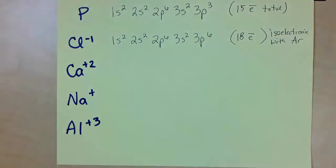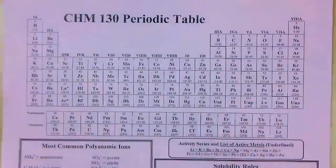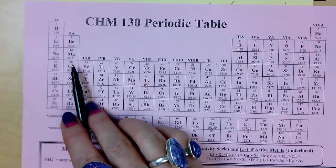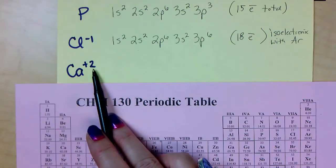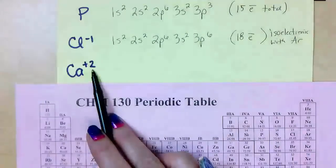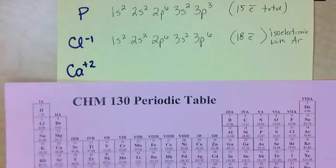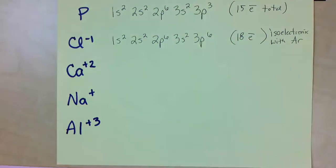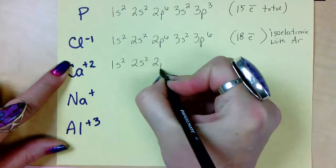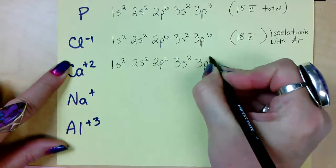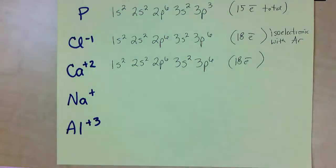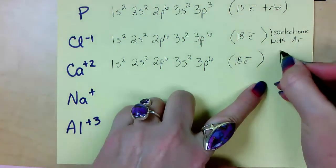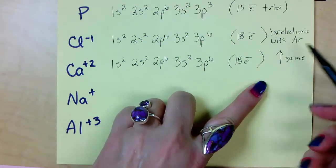Now let's try calcium plus 2. Calcium is number 20, so it has 20 protons always and forever, and the atom has 20 electrons. But plus 2 means 2 electrons went away — it lost 2 electrons. So we started with 20, two are lost, meaning we have 18. That gives us: 1s2, 2s2, 2p6, 3s2, 3p6 — 2+2+6+2+6=18 electrons. That's the same as Cl⁻ and the same as argon. Ca²⁺ is also isoelectronic with argon.